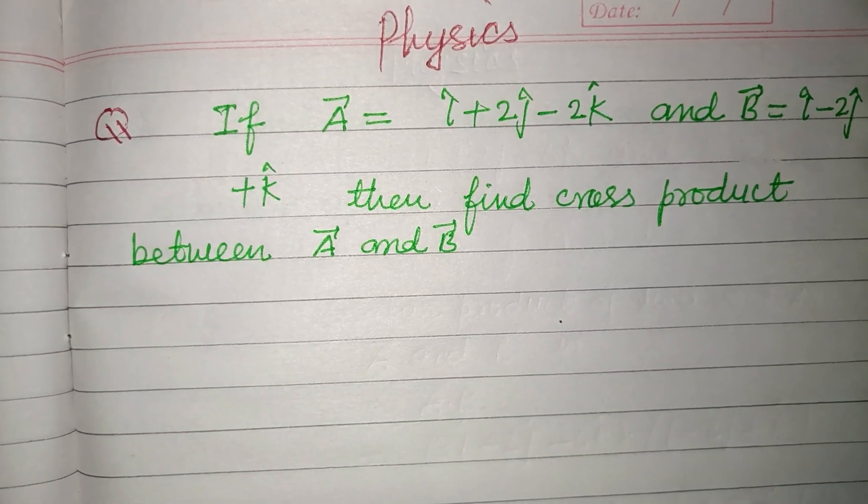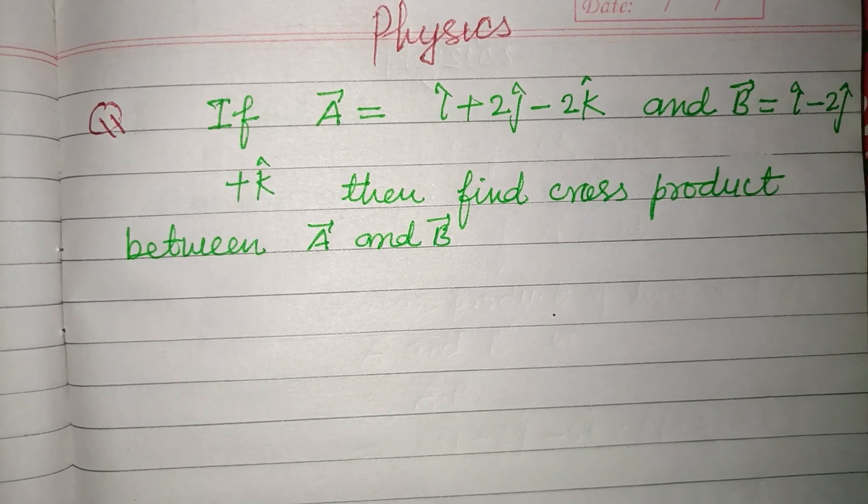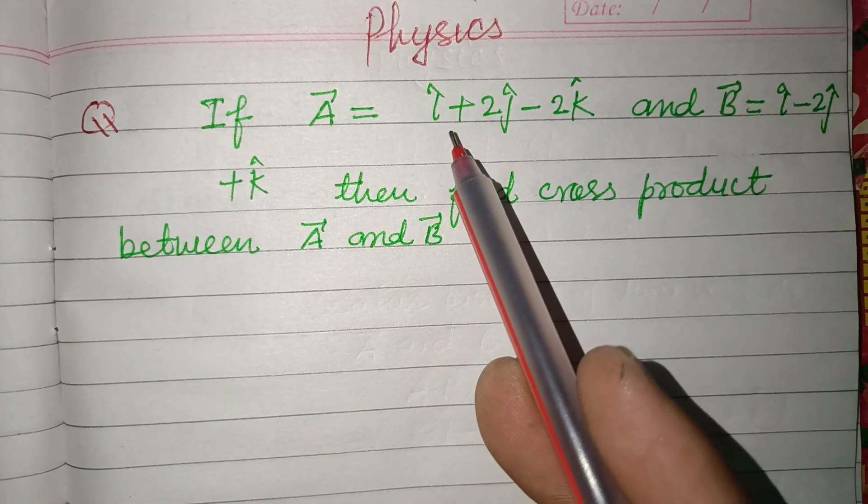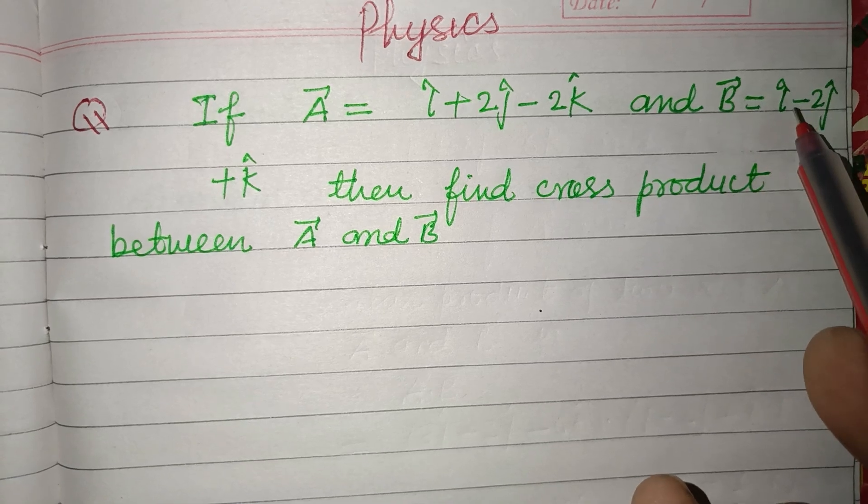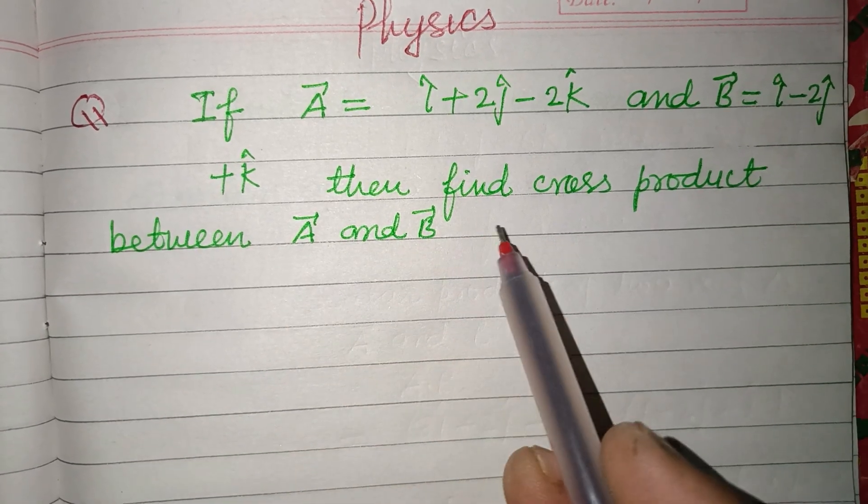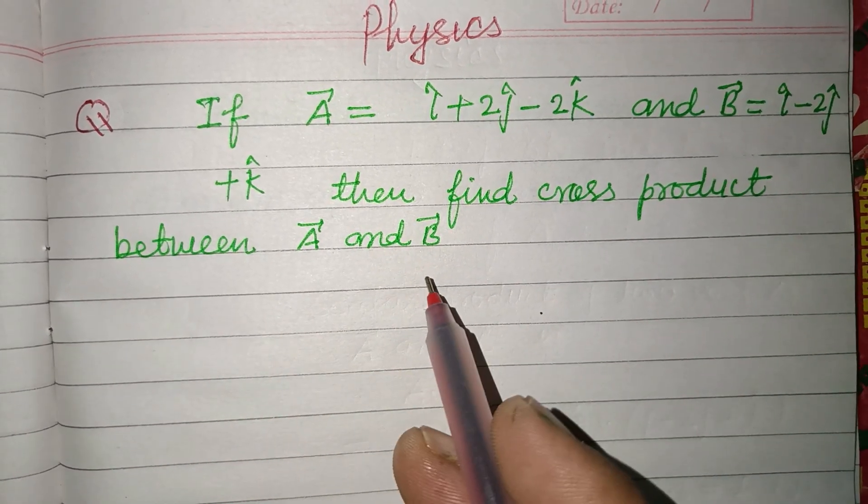Hello viewers, warm welcome to this YouTube channel. The question is: if A equals i cap plus 2j cap minus 2k cap, and B equals i minus 2j cap plus k cap, then find the cross product between A and B.